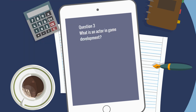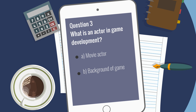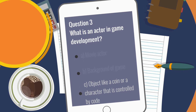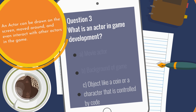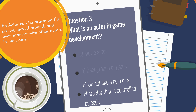Question 3: What is an actor in game development? A. Movie actor. B. Background of game. C. Object like a coin or a character that's controlled by code. The answer is C. In computer game development, an actor is an object like a coin or a character that is controlled by code. An actor can be drawn on the screen, moved around, and even interact with other actors in the game.